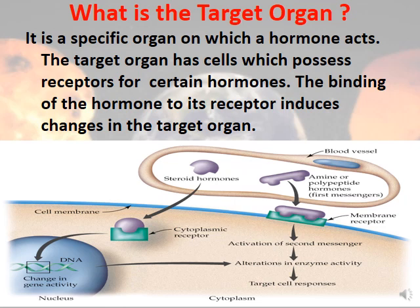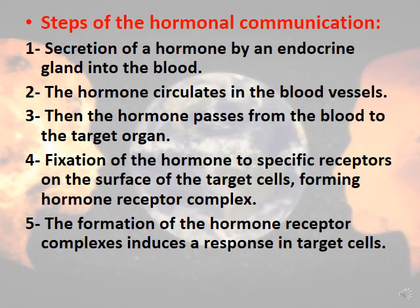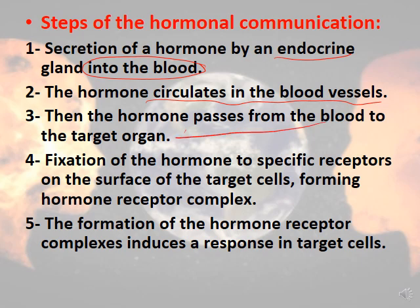What are the steps of hormonal communication? First, there is the secretion of the hormone by the endocrine gland directly into the blood. Then this hormone circulates in the blood vessels. After this, the hormone passes from the blood to its specific target organ. When it reaches the target organ, the hormone binds to the receptors on the target cells.